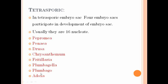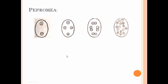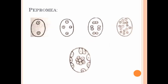The different types under the tetrasporic embryo sac are: Peperomia type, Penea type, Drusa type, Chrysanthemum type, Fritillaria type, Plumbagella type, Plumbago type, and Adoxa type. Let's see one by one these tetrasporic embryo sacs. First, the Peperomia type.